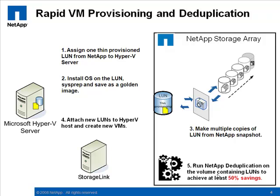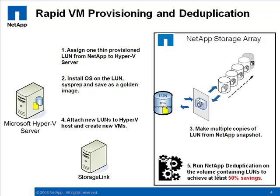We're going to assign one thin provision LUN between the NetApp and Hyper-V server. We're next going to install the operating system, Windows Vista on the LUN, sysprep it, and save it as a golden image. Next, we'll make multiple copies of that LUN using NetApp snapshots — in this case, 49 copies for a total of 50 virtual machines.